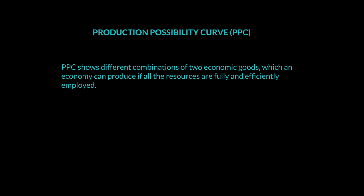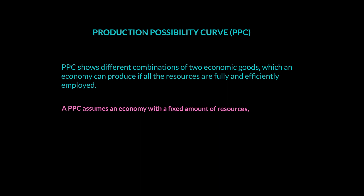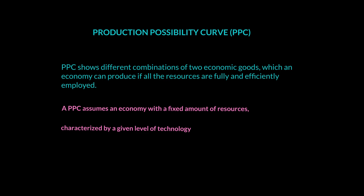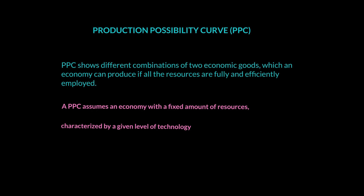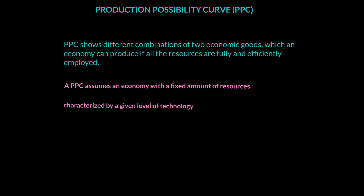When we draw the curve we will have some assumptions. The PPC assumes an economy with a fixed amount of resources — land, labor, capital, and enterprise — which are limited and do not vary when drawing a particular curve. We also assume a fixed level of technology, since technology improvements can increase production possibilities. Lastly, the PPC is a simplistic analysis showing only two goods.